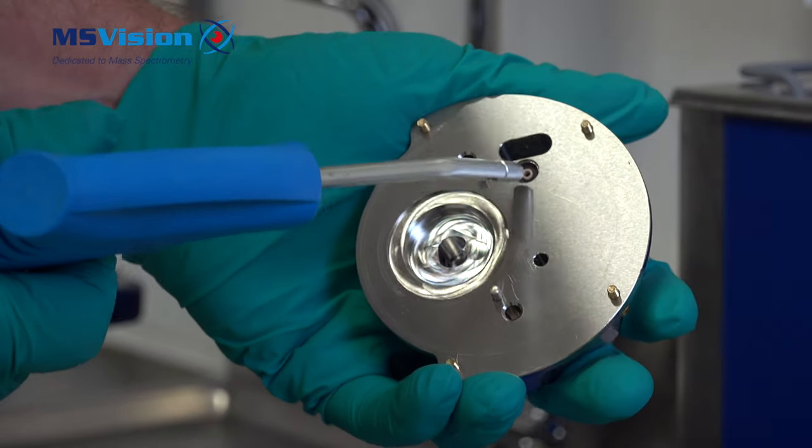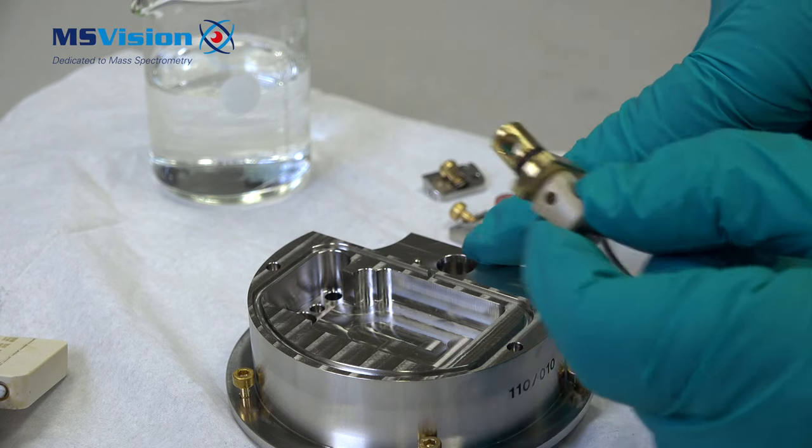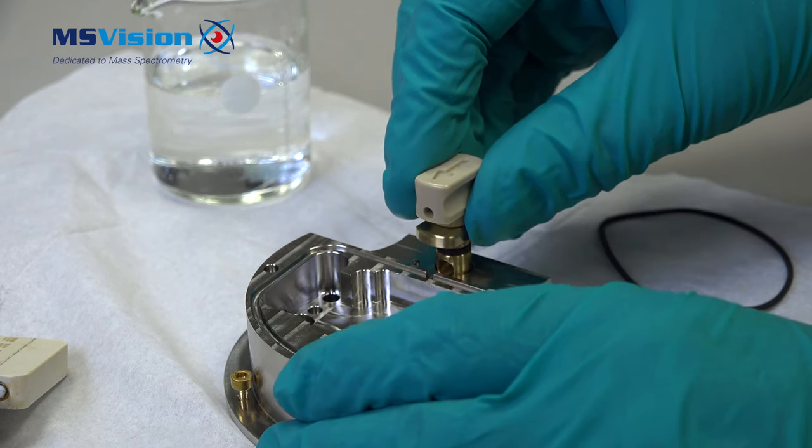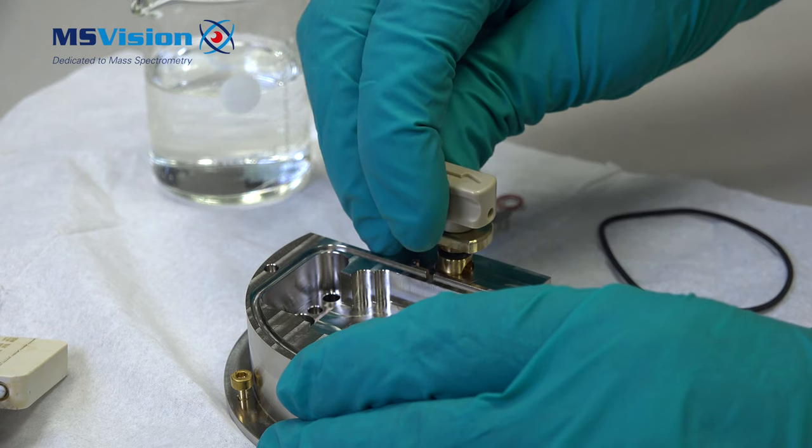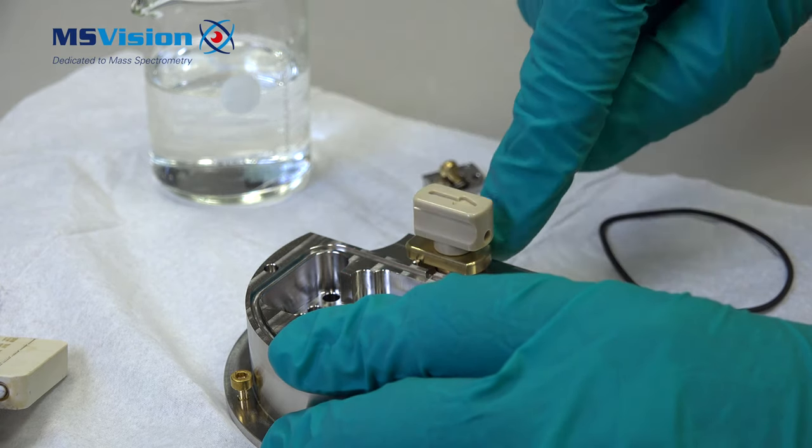After the methanol and blow drying we can reinsert the valve into the source block. Remember this is open and this is closed. Push firmly in.